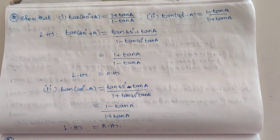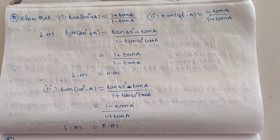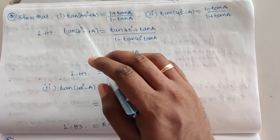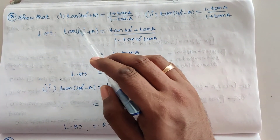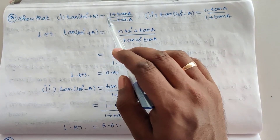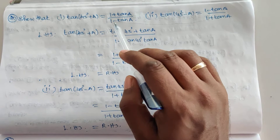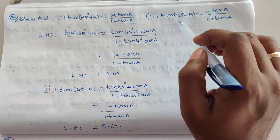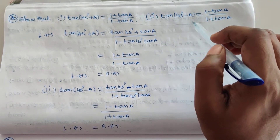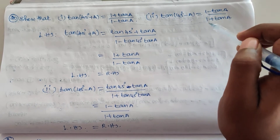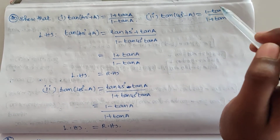Hi children, now question number 20. Show that the first sub-question: tan(45° + a) is equal to (1 + tan a) / (1 - tan a). The second one: tan(45° - a) is equal to (1 - tan a) / (1 + tan a).